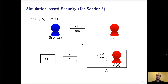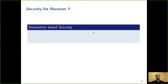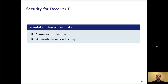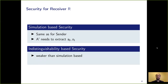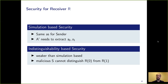At the same time, simulation-based security is very useful. For the receiver, we can also have simulation-based security, which is basically the same except that A prime now needs to extract the inputs of the malicious sender, S0 and S1. But when we consider security for the receiver there is a simpler, weaker definition called indistinguishability-based security, which only asks that a malicious sender cannot distinguish an interaction with an honest receiver for input 0 from an interaction for input 1. This is much easier to accomplish.